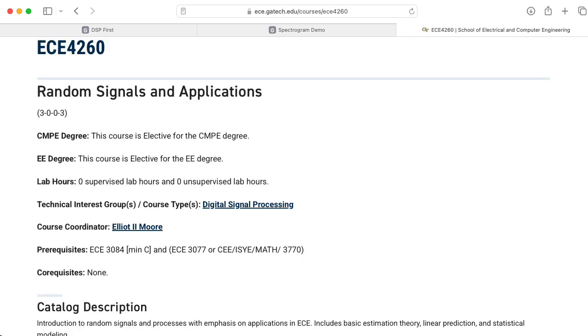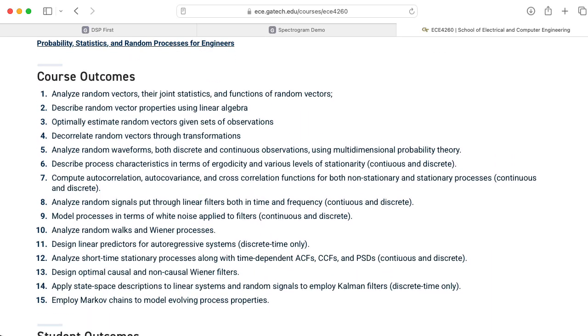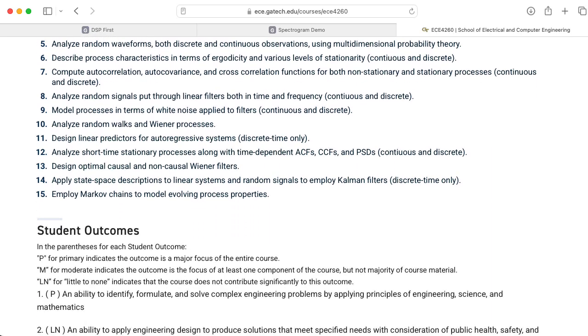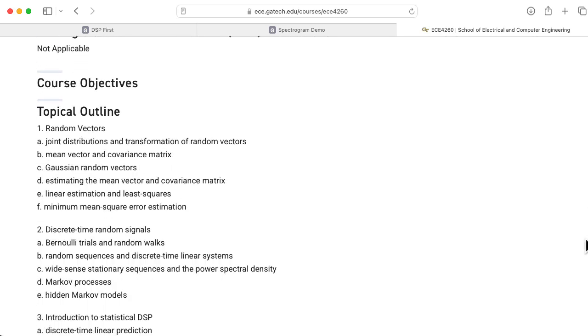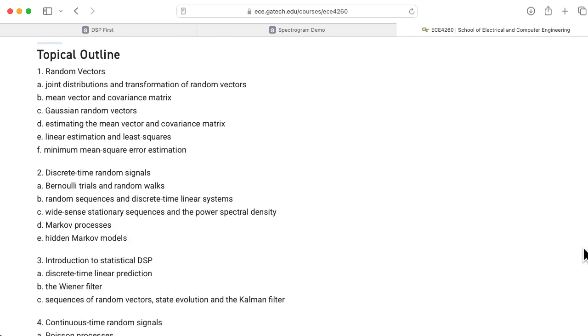We have a class called EC4260 Random Signals and Applications that digs into the kind of material needed to talk about random signals like white noise. We don't really have the necessary machinery in EC2026.